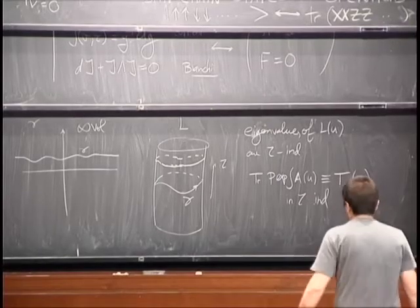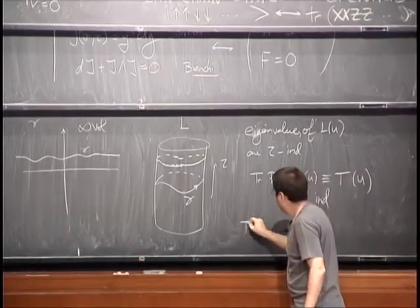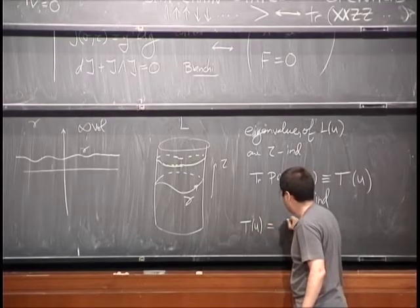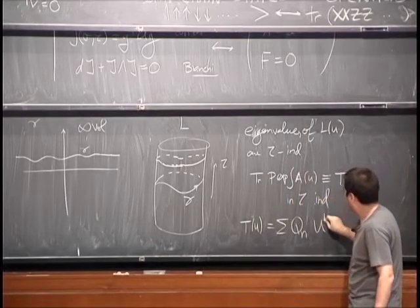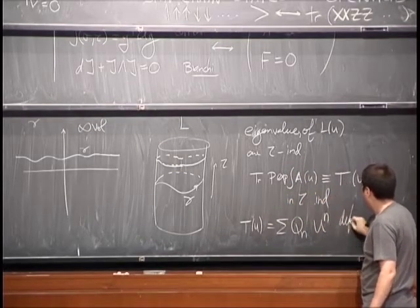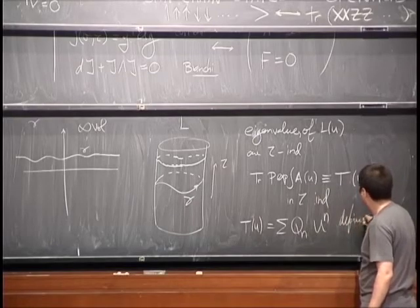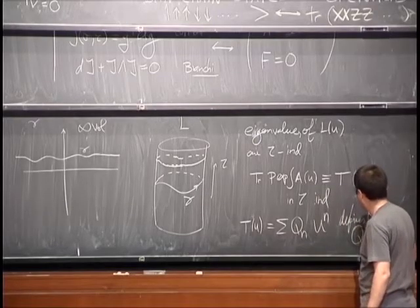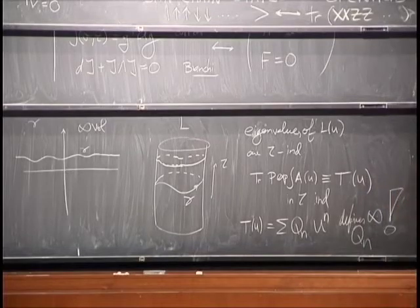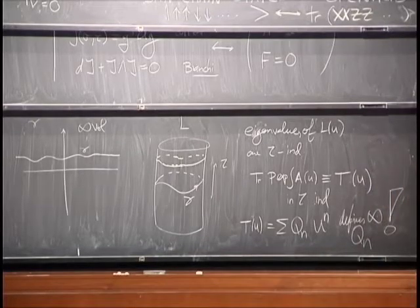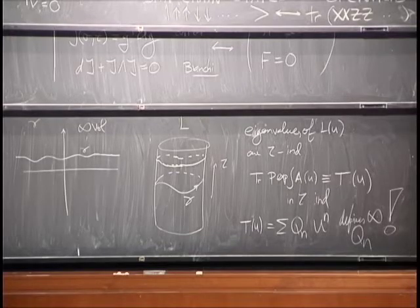T(u), by expanding in some power series as ΣQ_N·u^N, defines infinitely many Q_N's. Therefore these theories have this whole tower of conserved charges.